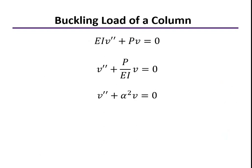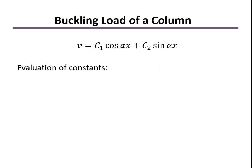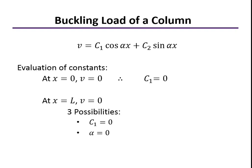That can be solved pretty easily if we let the variable alpha be the square root of P over EI. Then we have V double prime plus alpha squared V is equal to zero. The solution for that involves both cosine and sine of alpha X, and two constants that depend on the initial conditions. We know that at the bottom, at X equals zero, the displacement is equal to zero. That leads to the first constant being equal to zero. We also know at the upper end, V is equal to zero. There's three possibilities that can cause V to equal zero. One is if C1 is equal to zero, or if alpha is equal to zero, or if the sine of alpha L is equal to zero. Any one of those would cause the displacement at the upper end to be equal to zero.